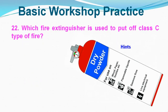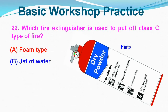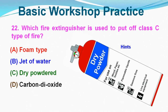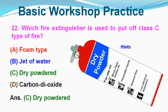Question No. 22: Which fire extinguisher is used to put off a Class C type of fire? Option A: Foam Type, Option B: Jet of Water, Option C: Dry Powder, Option D: Carbon Dioxide. Correct answer is Option C, Dry Powder.